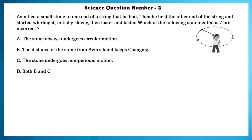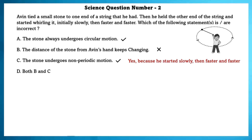Science question number 2. Avin tied a small stone to one end of a string, held the other end and started whirling it — initially slowly, then faster and faster. Which statement is incorrect? The stone always undergoes circular motion — true. The distance of the stone from Avin's hand keeps changing — this is false, as the distance does not change. The stone undergoes non-periodic motion — yes, because he started slowly then faster and faster.